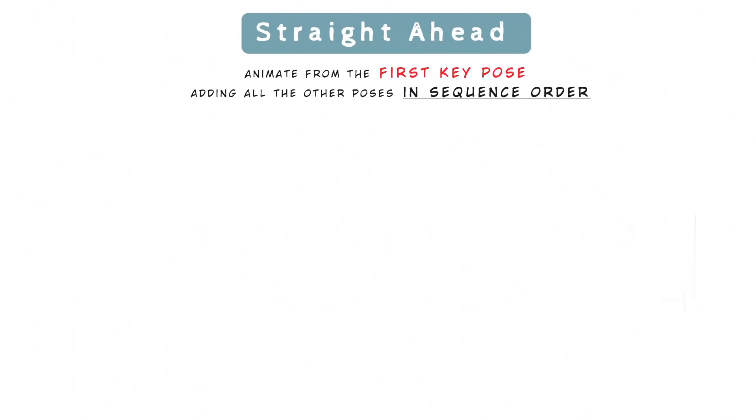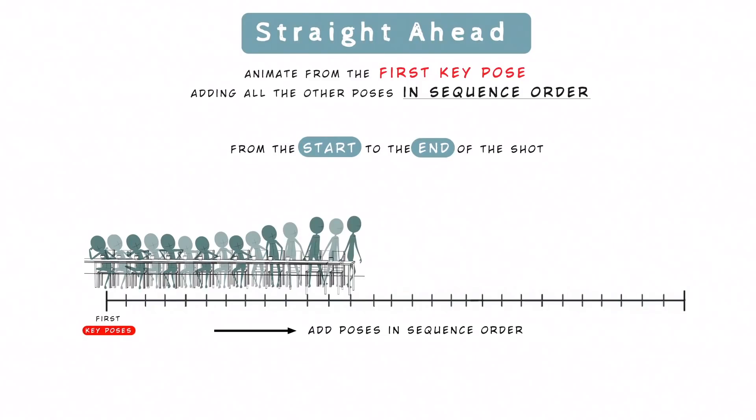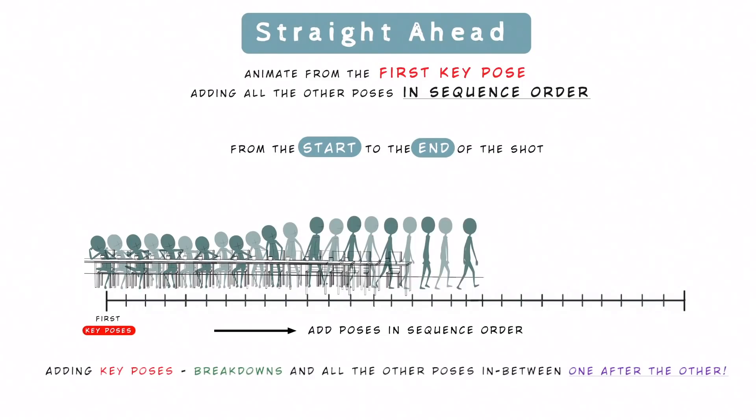As the name suggests, straight ahead means to start to animate from the first key pose, adding all the other poses in sequence order. So we animate from the start to the end of the shot, going ahead, adding key poses, breakdowns, and all the other poses in between, one after the other.